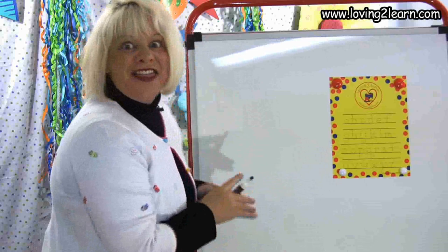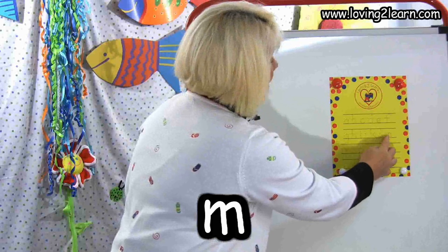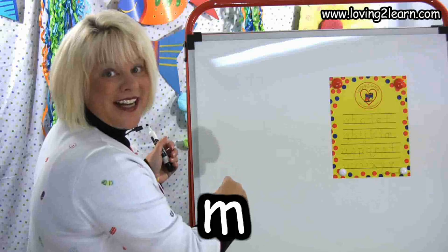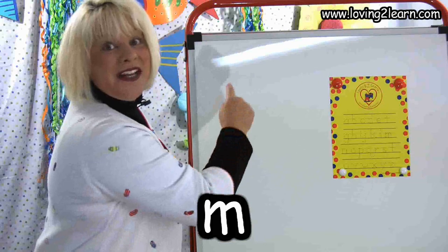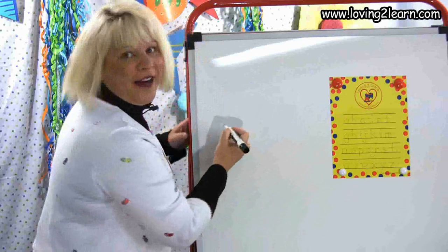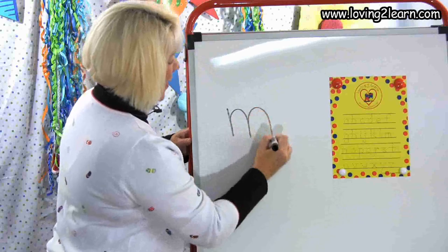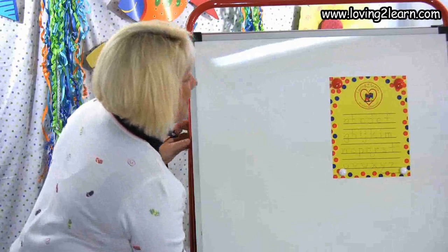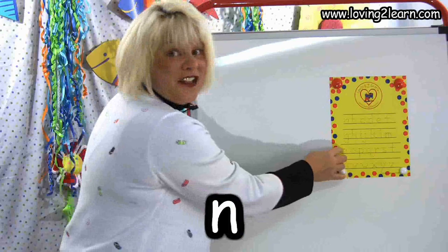The next letter is the letter M. We go straight line down, around the hill, and around the hill again. Let's do it in the air: straight line down, around the hill, and around the hill again. Let's write it on the wipe-off board: straight line down, around the hill, and around the hill again. There is the letter M.